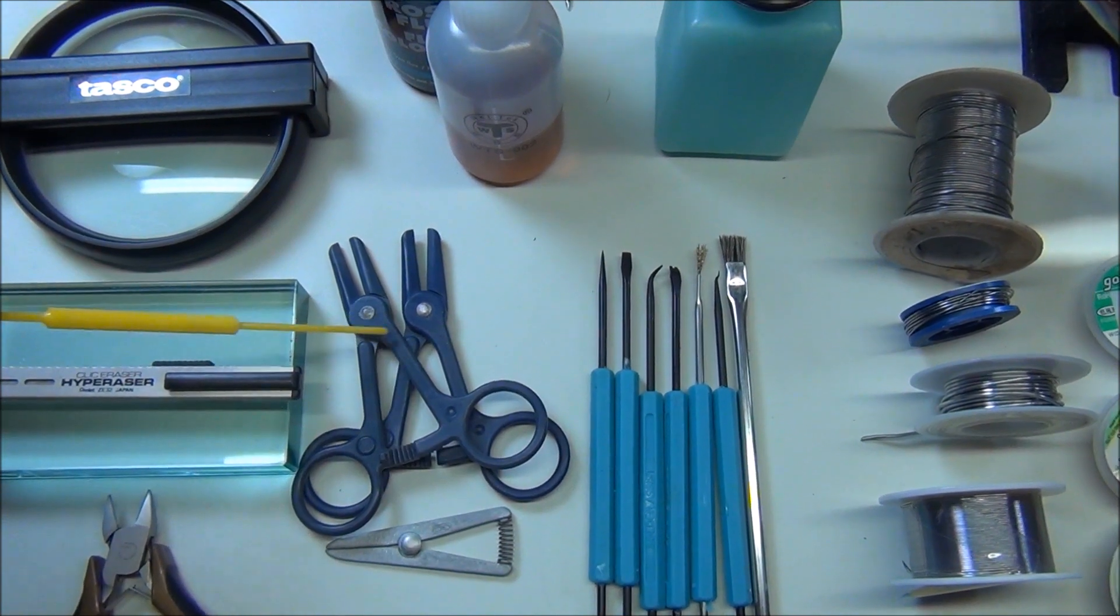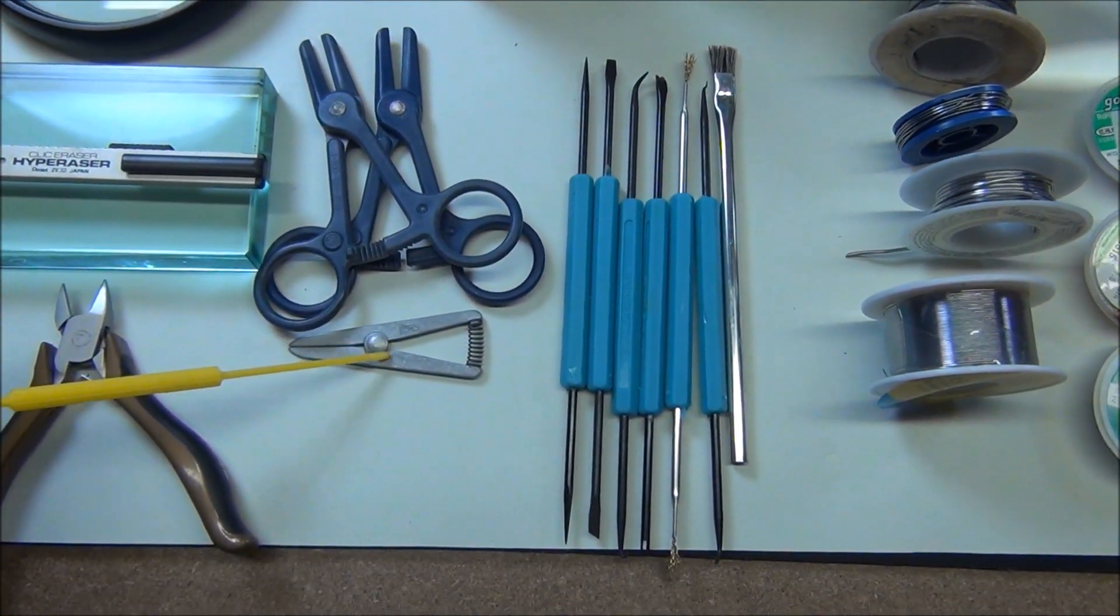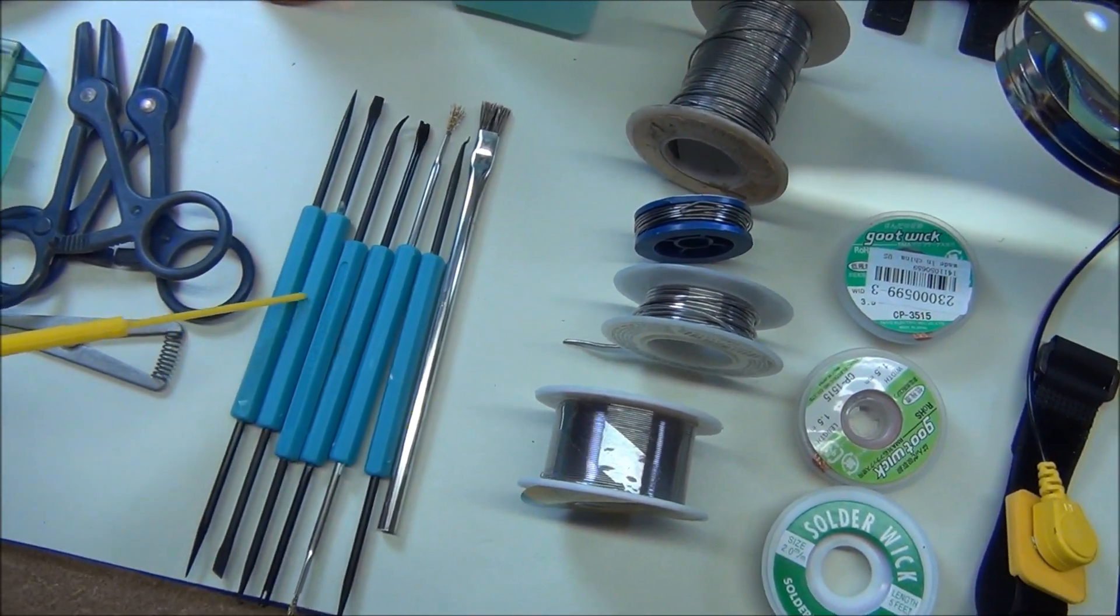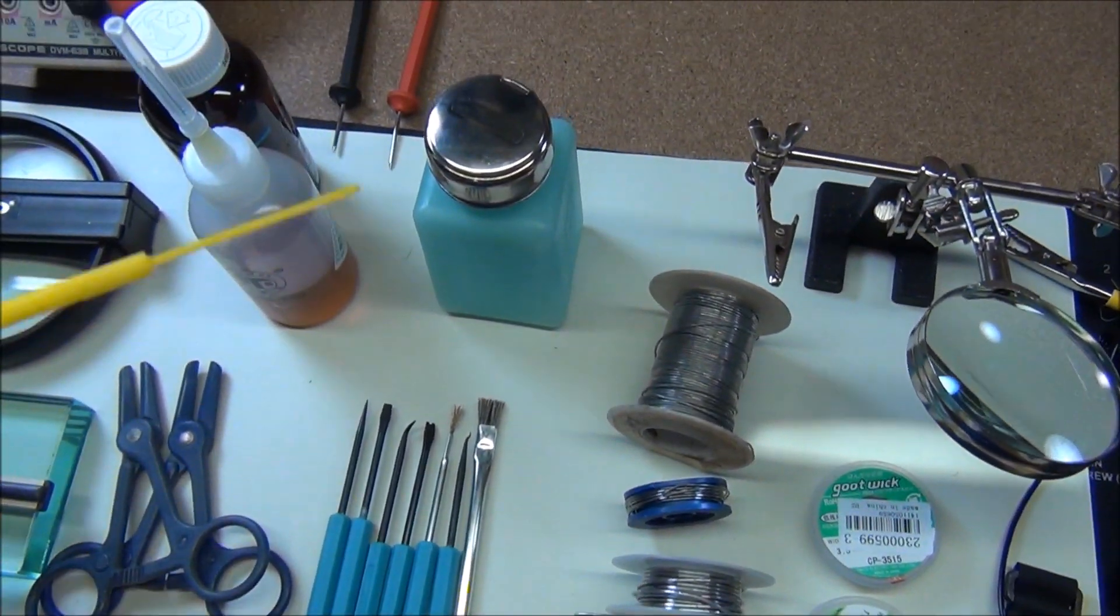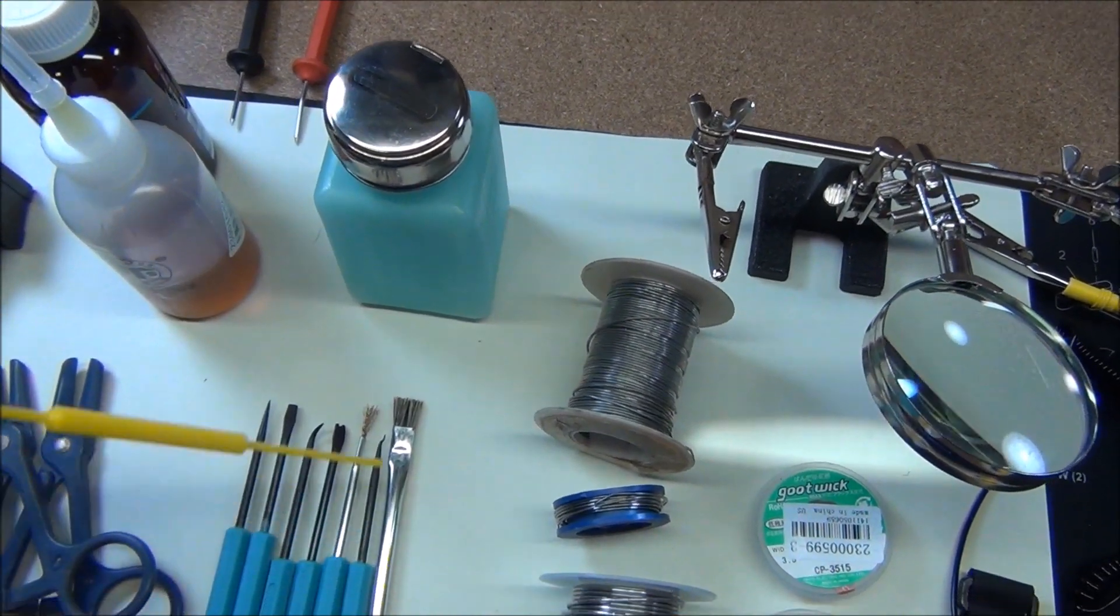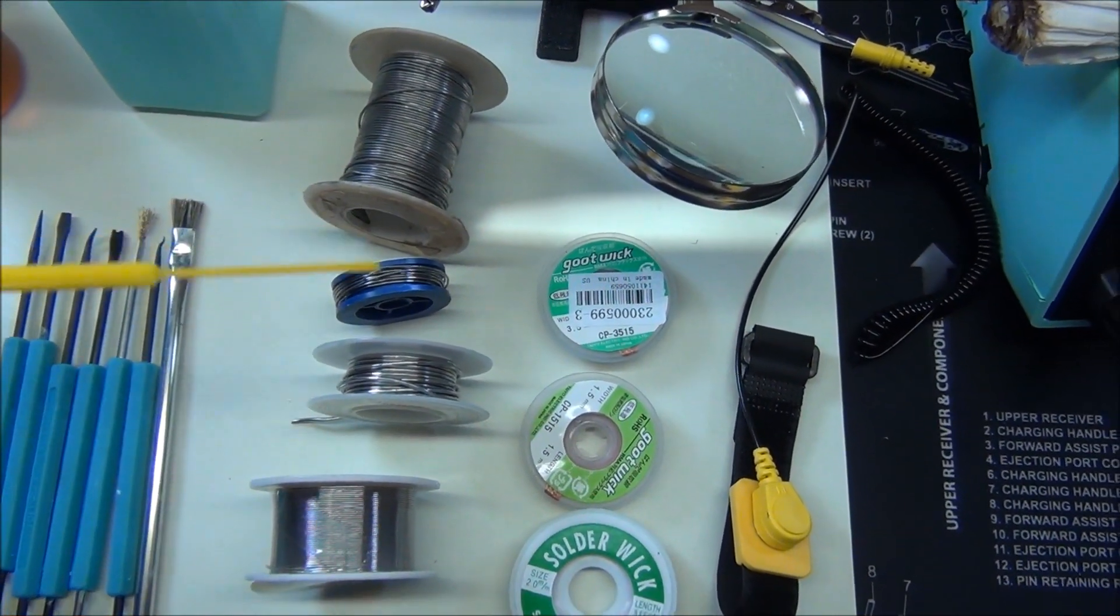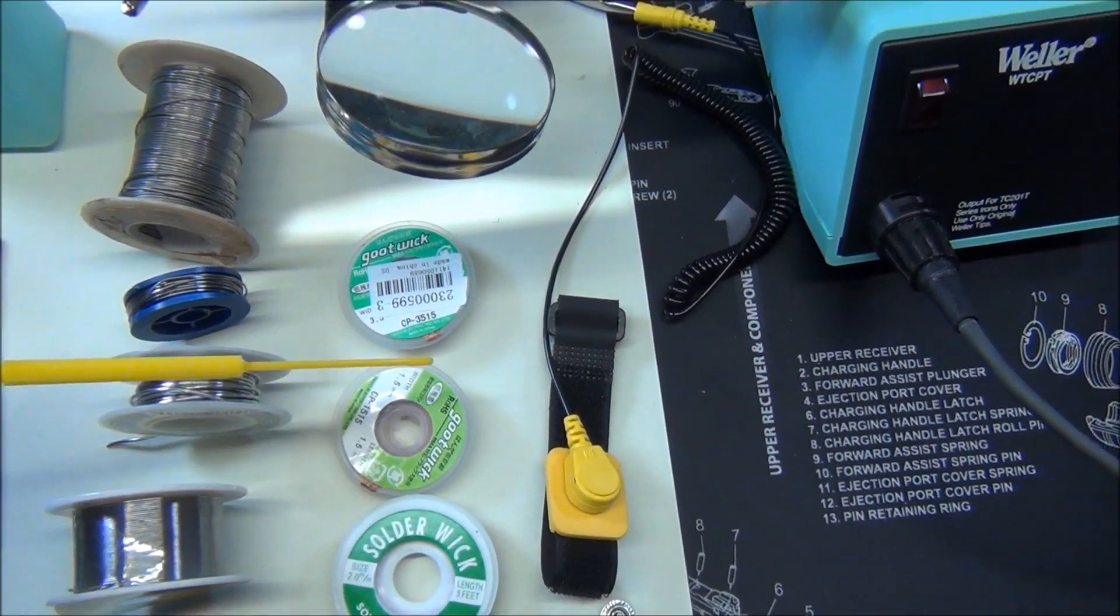These plastic hemostats come in handy sometimes, and I've got a little heat sink here if needed. A variety of different soldering tools, an alcohol bottle that I use with an acid brush, different sizes of solder, and different sizes of solder wick.